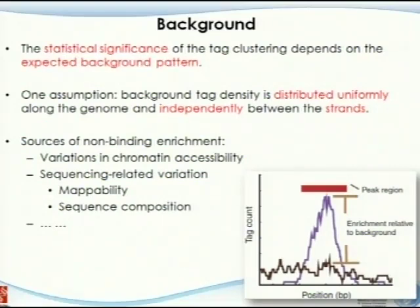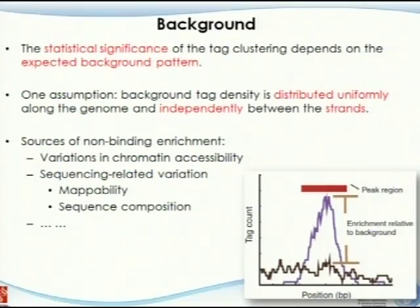Another source is sequencing-related variation, which includes the mappability issue — some nearby regions don't show any signal because they're not mappable, or some sequences are harder to sequence than others. For example, if a sequence is 90% CG, it's very hard to sequence that fragment. If you have more AT content, you can sequence it more easily. These sequencing composition differences can give you sequence-based variation. The point of this slide is: once you want to study the significance of a peak, you better look at what the background is.